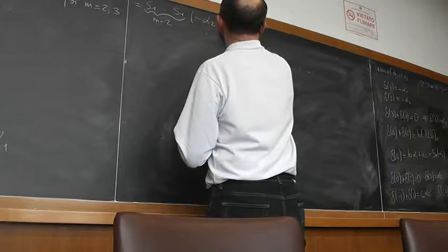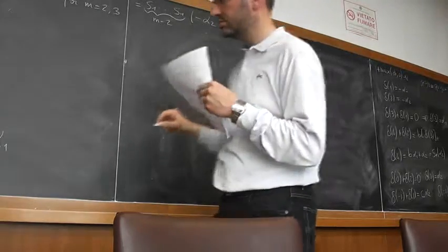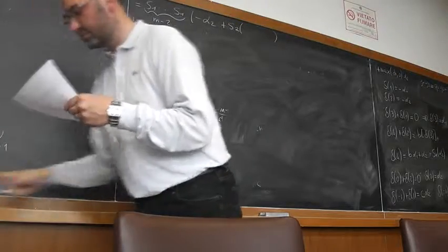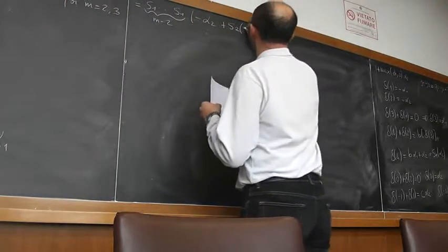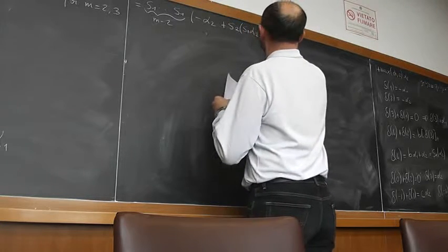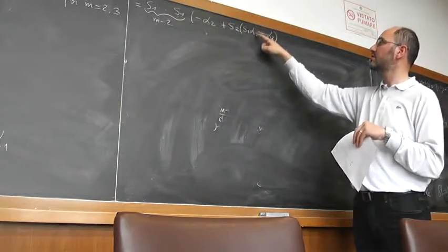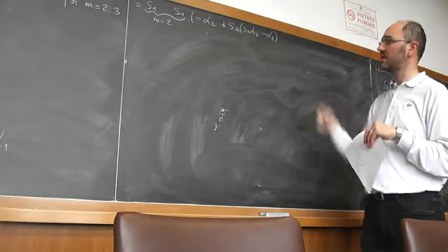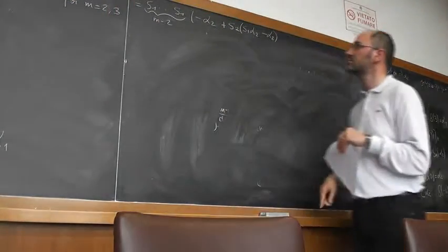This is plus S2 of B alpha 1, and B alpha 1 is S1 alpha 2 minus alpha 2, because if I apply S1 to alpha 2, I obtain alpha 2 plus B alpha 1, so that's the substitution.